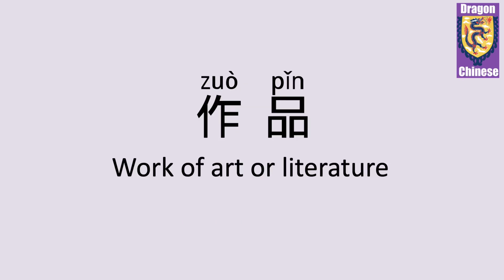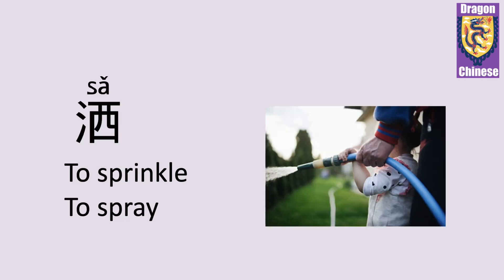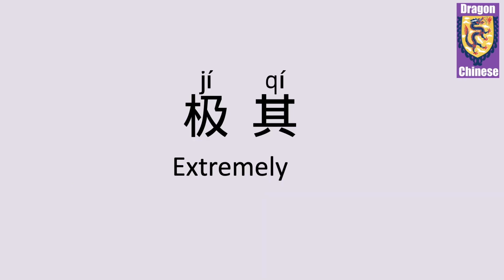作品 — work of art or literature. 作品. 洒 — to sprinkle, to spray. 洒. 极其 — extremely. 极其.